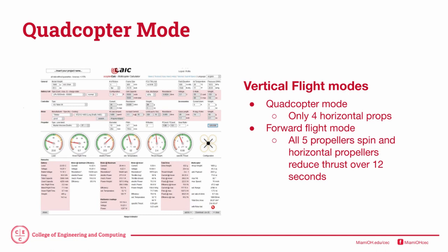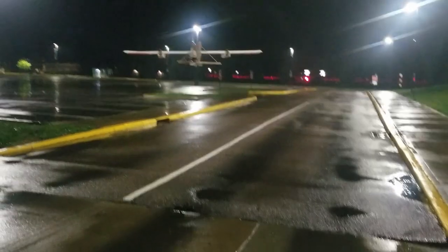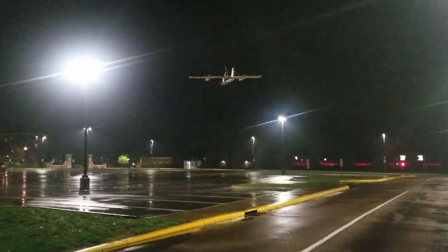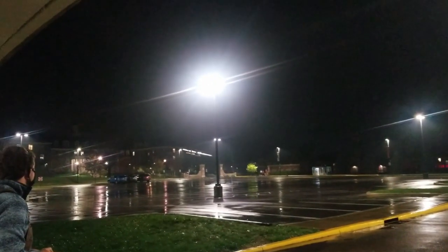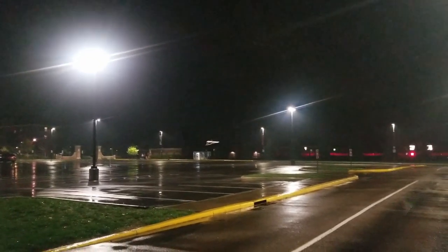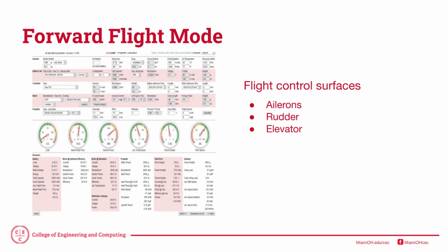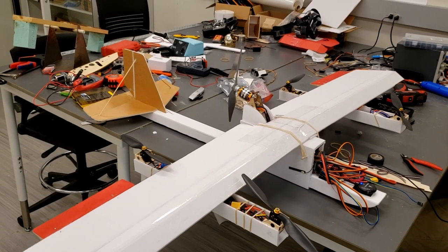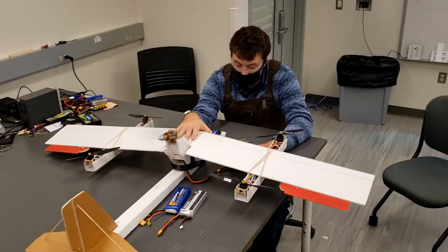The aircraft has three different flight modes. It has a quadcopter mode where the flight controller produces level flight in a vertical takeoff configuration. The second is a transition mode where we go from quadcopter to regular airplane with all five motors spinning, and after a period of time the thrust slowly decreases on the vertical motors as we generate lift from gaining airspeed with the pusher prop. In forward flight mode we have traditional control surfaces like ailerons, rudder, and elevator, and it allows us to fly much more efficiently than a quadcopter because we're only running one motor instead of four.